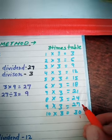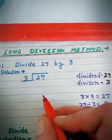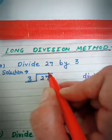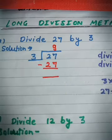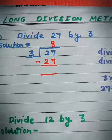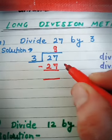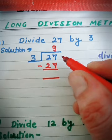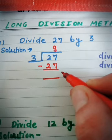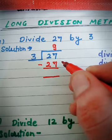Write 9 on the top of 27, and write 27 below 27 and subtract 27 minus 27.